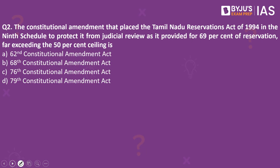Now let's look into the next practice question. The constitutional amendment that placed the Tamil Nadu Reservations Act of 1994 in the 9th schedule to protect it from judicial review, as it provided for 69% reservation far exceeding the 50% ceiling, is: 62nd Constitutional Amendment Act, 68th Constitutional Amendment Act, 76th Constitutional Amendment Act, or 79th Constitutional Amendment Act. The answer is the 76th Constitutional Amendment Act.